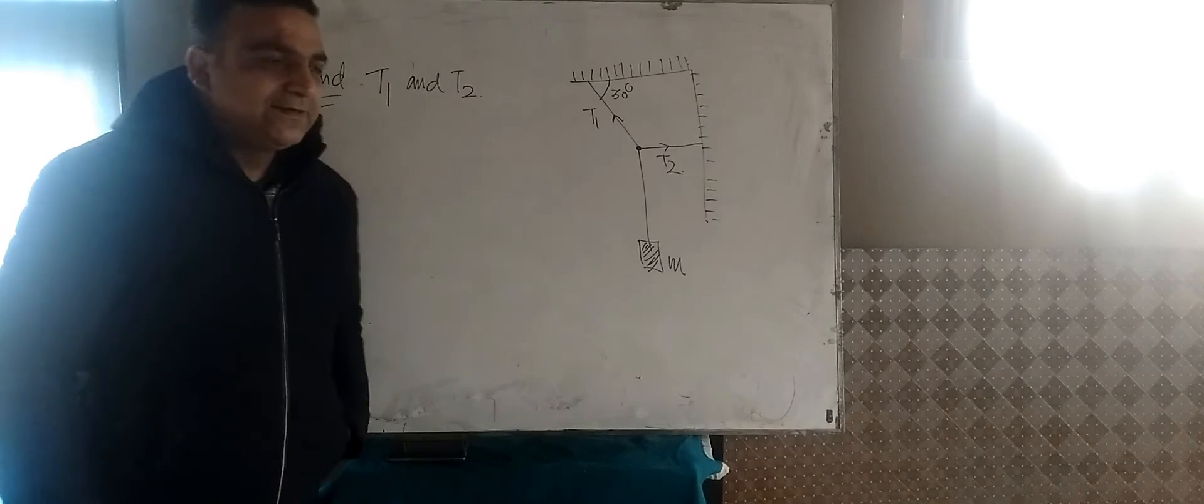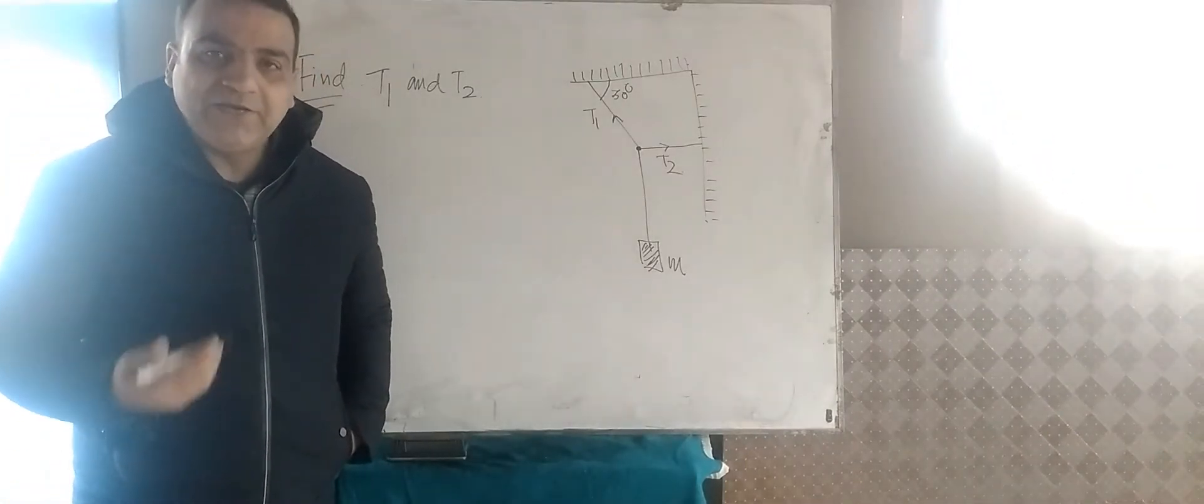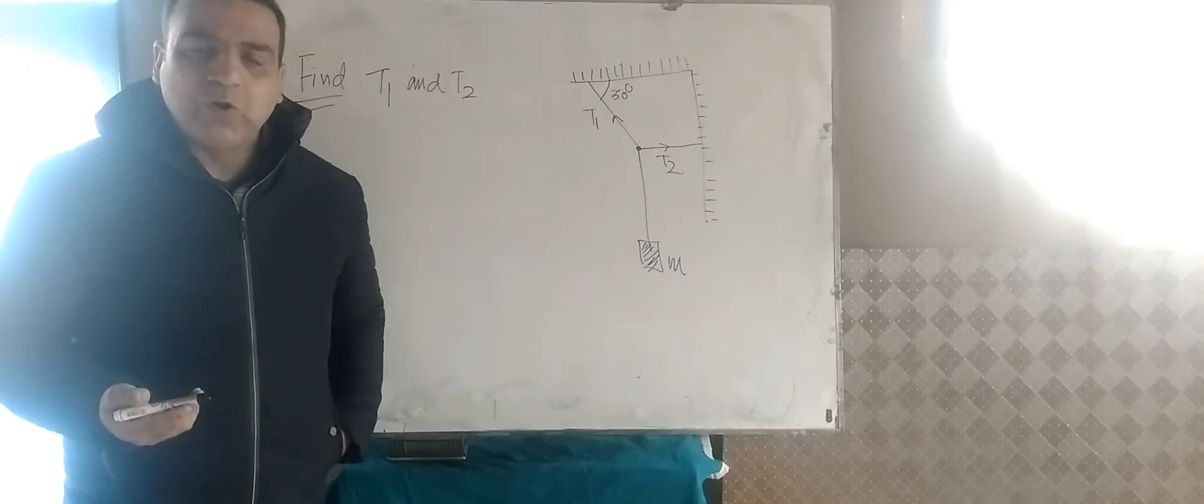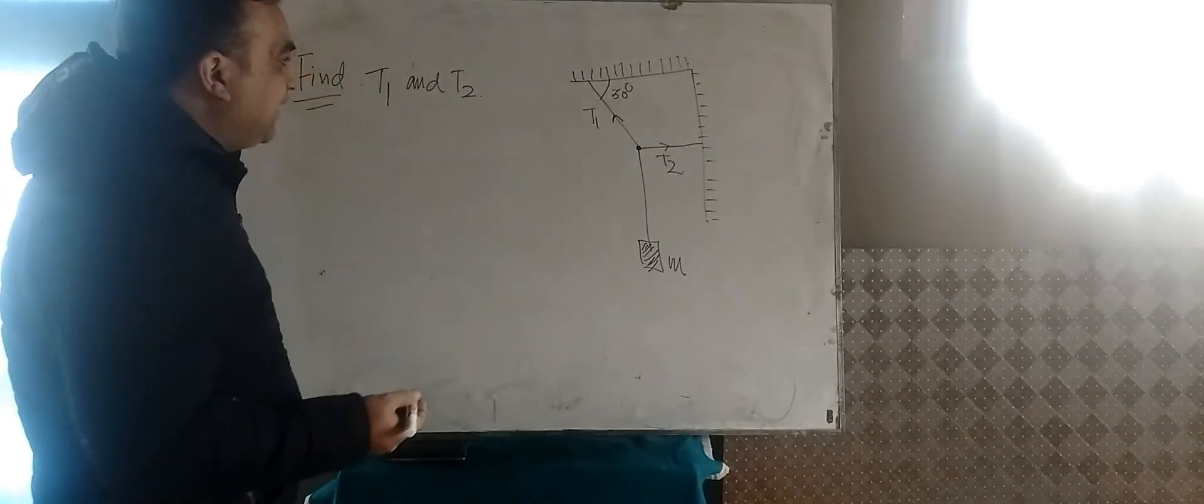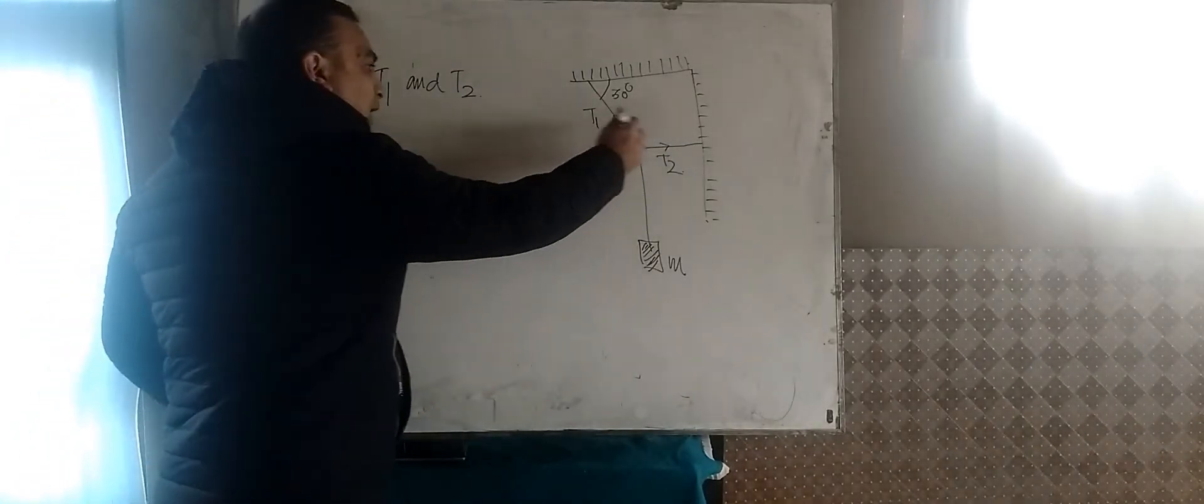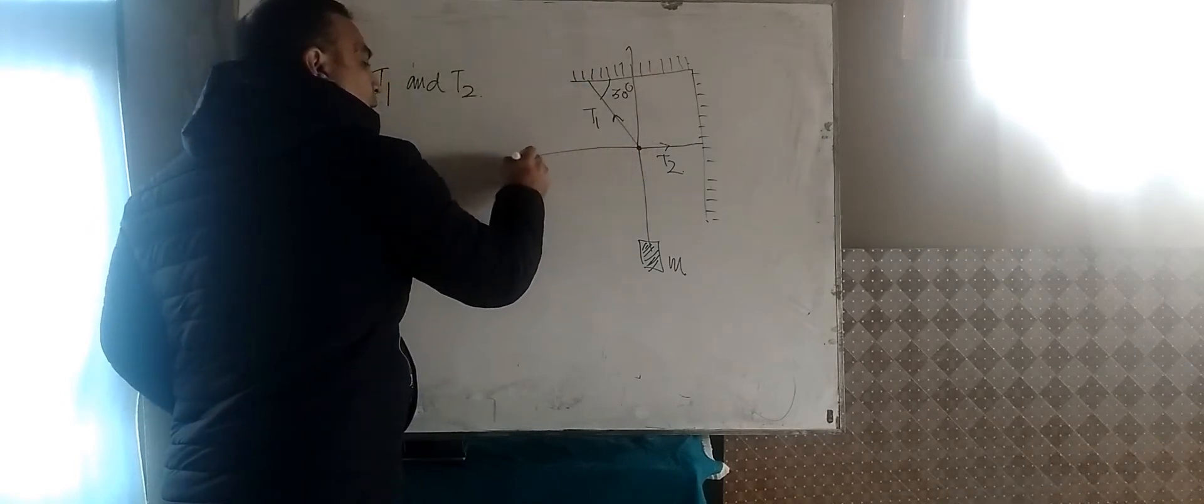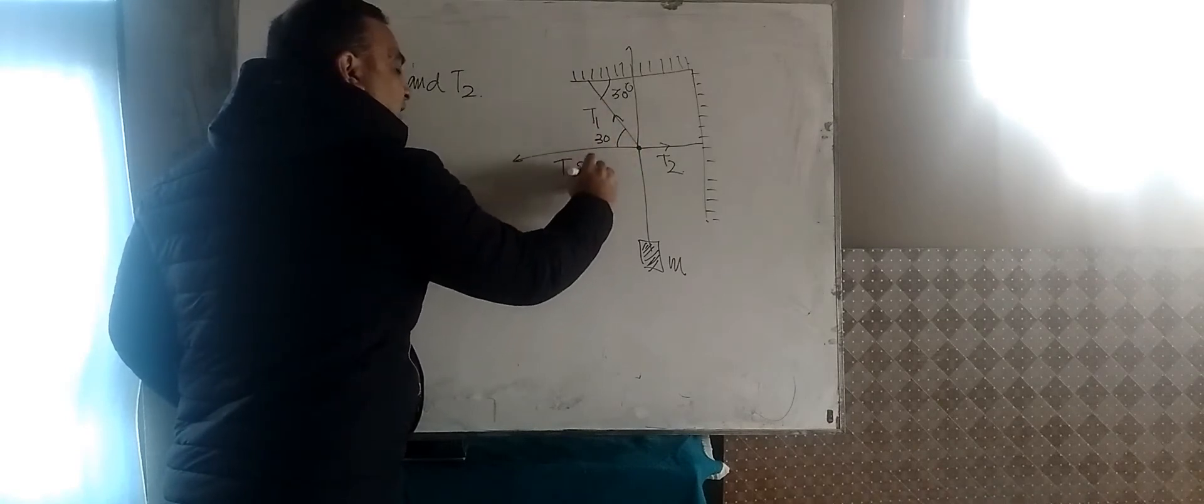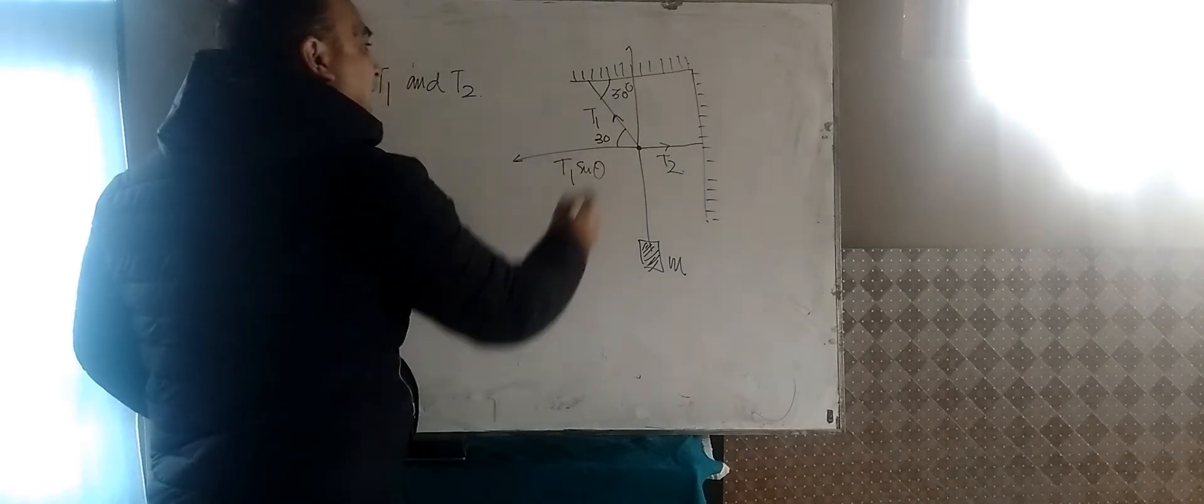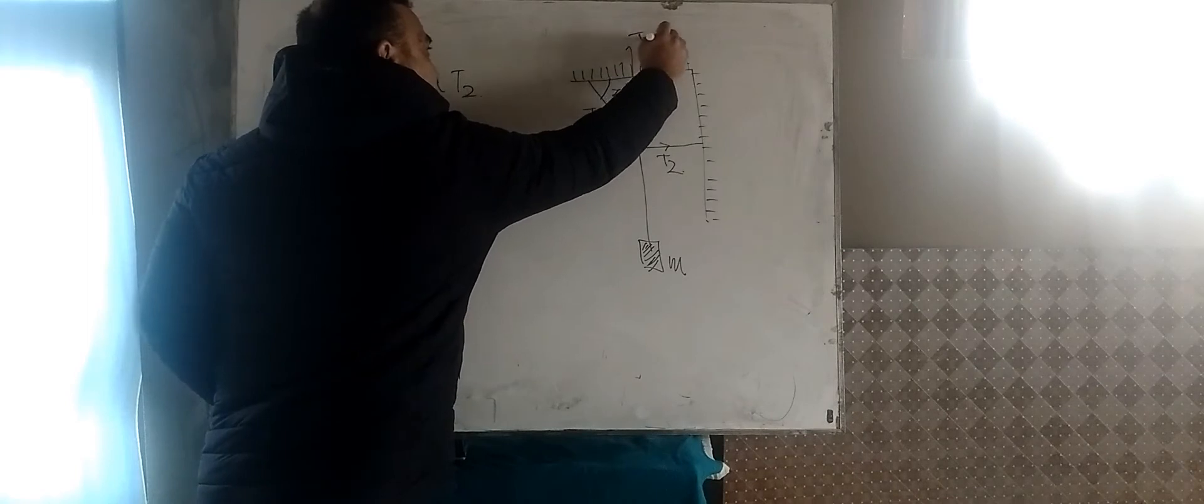For that, the best way is that we should resolve these vectors. This tension in the given problem is a vector quantity and a vector can be resolved. So you can see that this tension T1 can be resolved like this. If this is 30, this is also 30. This one will be T1 sin theta and this component of T1 will be T1 cos theta.